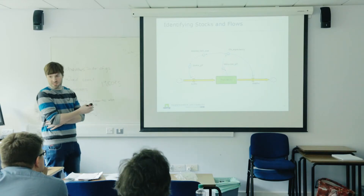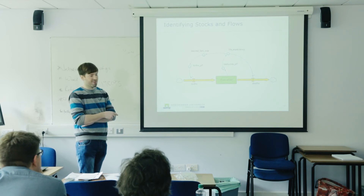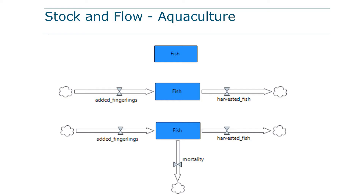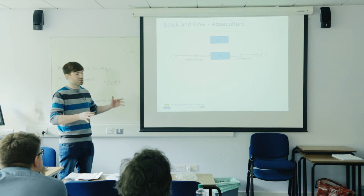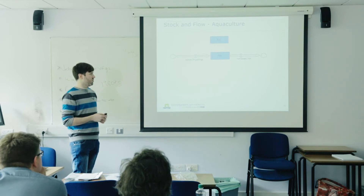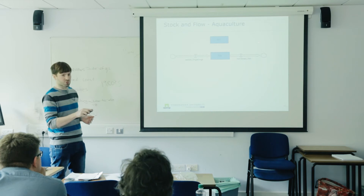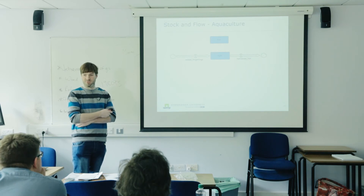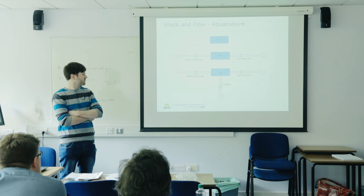So if population is identified as the stock, birth represents new people getting into the population and death represents people leaving. In aquaculture, the stock is the fish, and the flows are added fingerlings and harvested fish. As soon as they reach a specific size — after a certain number of days — variables affect the outflow of the stock. The size of fingerlings coming in determines after how many days they get out. What's missing for an aquaculture model? Mortality — that's one more outflow.